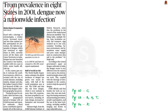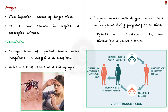Dengue is a viral infection caused by the dengue virus. The infection is more common in tropical and subtropical climates. The dengue virus is transmitted to humans through the bite of infected female Aedes species mosquitoes — like Aedes aegypti and Aedes albopictus. These Aedes species mosquitoes also spread Zika, Chikungunya, and other viruses. Note that dengue cannot spread directly from person to person — the only possible ways are human-to-mosquito and mosquito-to-human transmission. There is also evidence of maternal transmission: a pregnant woman infected with dengue can pass the virus to her fetus during pregnancy or around the time of birth, causing preterm birth, low birth weight, and fetal distress.